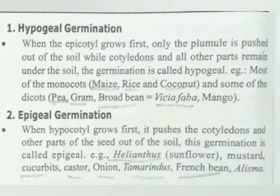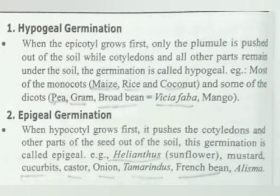In hypogeal germination, when the epicotyl grows first, only the plumule is pushed out of the soil, while the cotyledons and all other parts remain under the soil. This germination is called hypogeal.